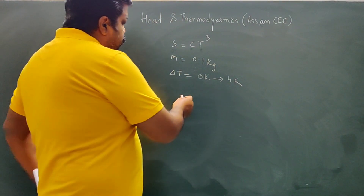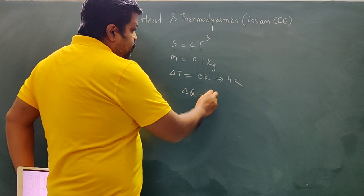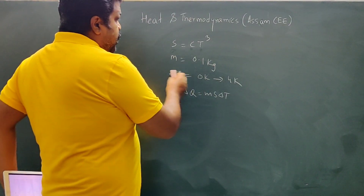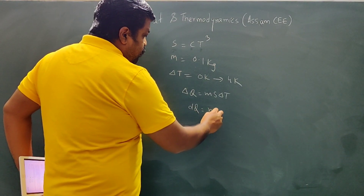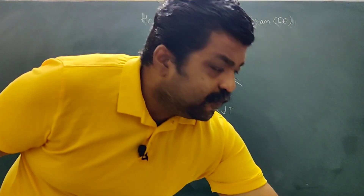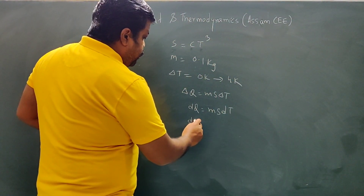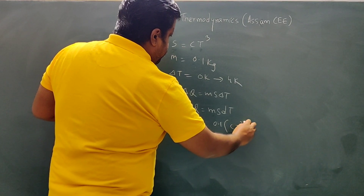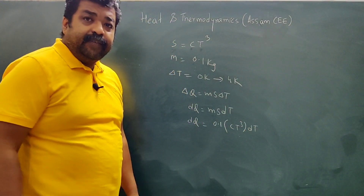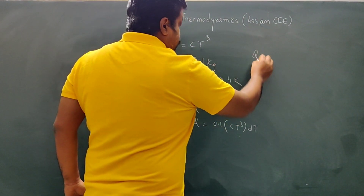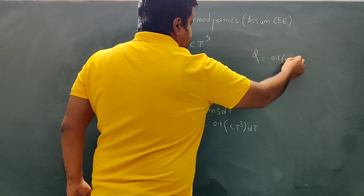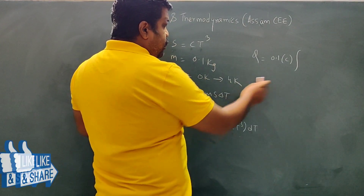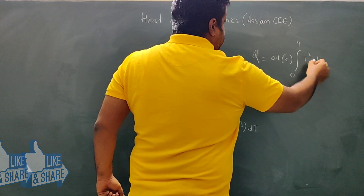So the formula is delta Q = ms delta T. Let me write the calculus form: dQ = ms dT. Here dQ = 0.1 × C × T³ dT, integrating from temperature 0 to 4 kelvin.